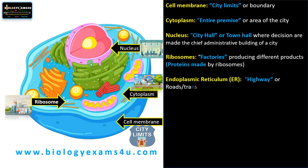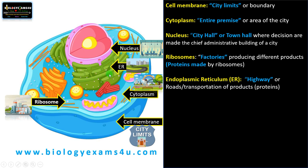Endoplasmic reticulum can be compared to the highway or road transportation system that transports these products to different parts of the city or cell. These are membranous sacs — especially rough endoplasmic reticulum, which has ribosomes — that are involved in the synthesis of membrane and secretory proteins. It is connected to the nuclear membrane. The proteins synthesized are modified and transported through the endoplasmic reticulum and dispatched to different parts of the cell, so ER can be compared to the highway of a city.